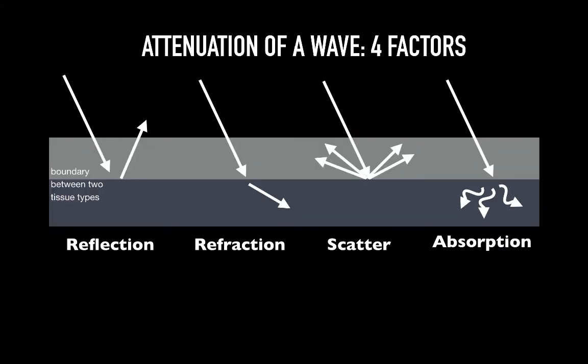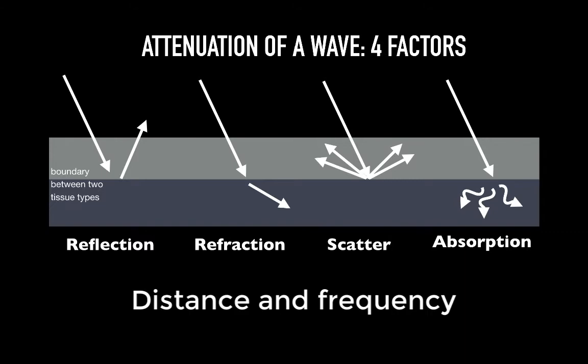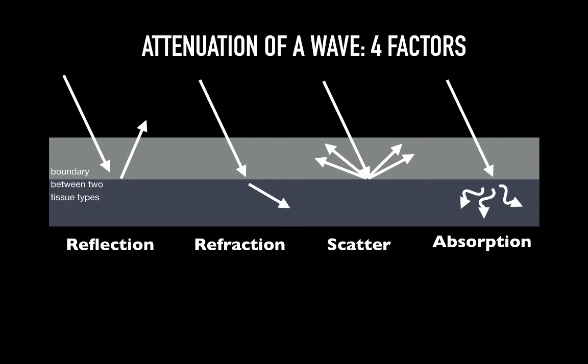Sound waves that interact with tissue often undergo attenuation, meaning they weaken as they propagate in the medium. The two biggest contributors to attenuation are distance and frequency or wavelength. The farther a sound wave must travel, the poorer the signal and the greater the attenuation. Also, the higher the frequency and shorter the wavelength, the less depth we can see. Interestingly, it is the juxtaposition of tissue types, or tissue boundaries, that makes imaging possible.